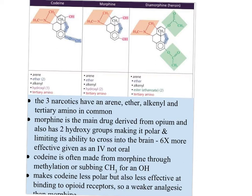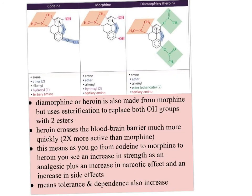Codeine is still an effective painkiller, but not as strong as morphine. Diamorphine, or heroin, is also made from morphine but uses esterification to replace both OH groups with two esters — ethanoate groups — shown in green. This makes heroin much less polar than having hydroxyl groups, so it crosses the blood-brain barrier much more quickly, and it's two times more active than morphine.